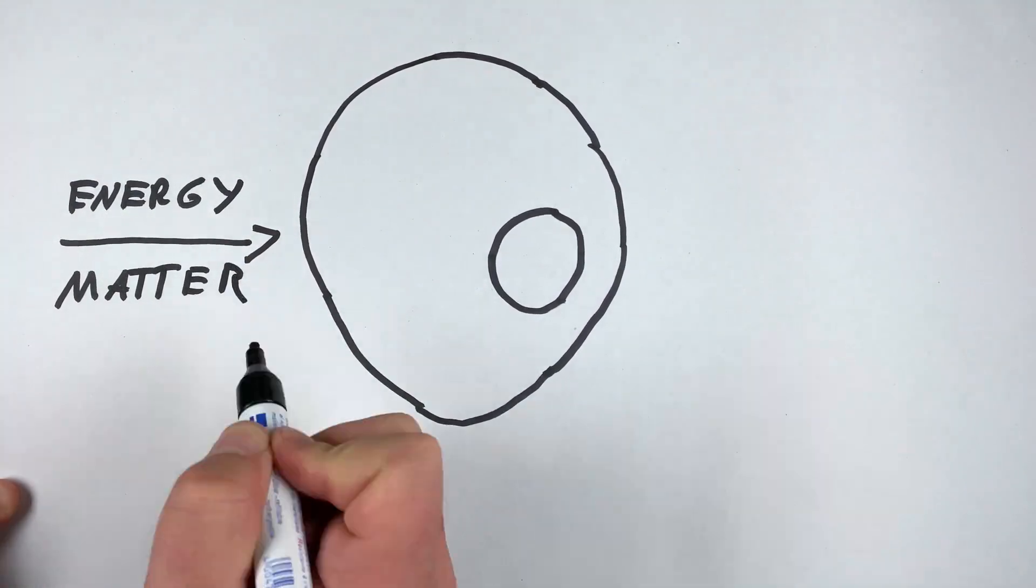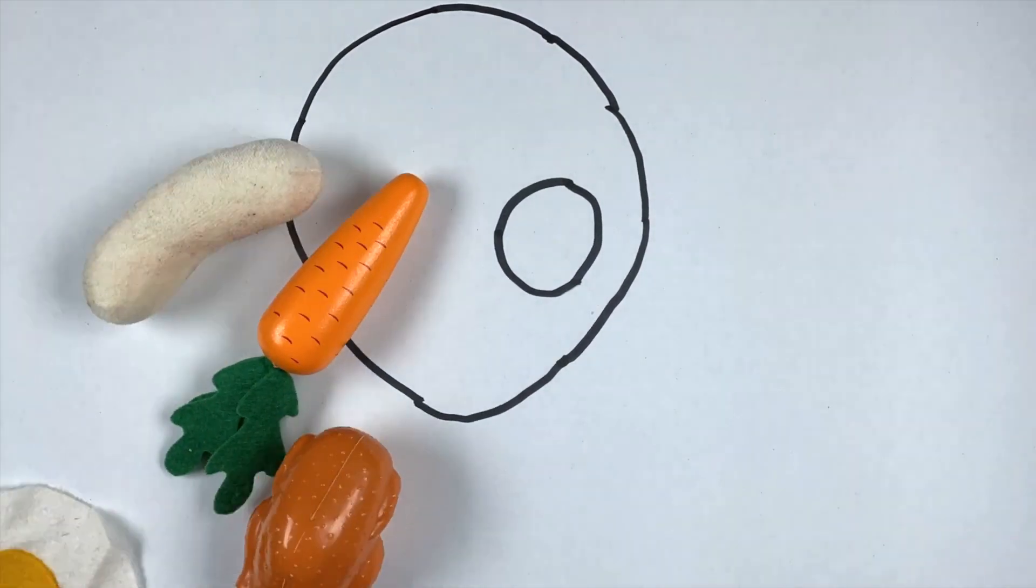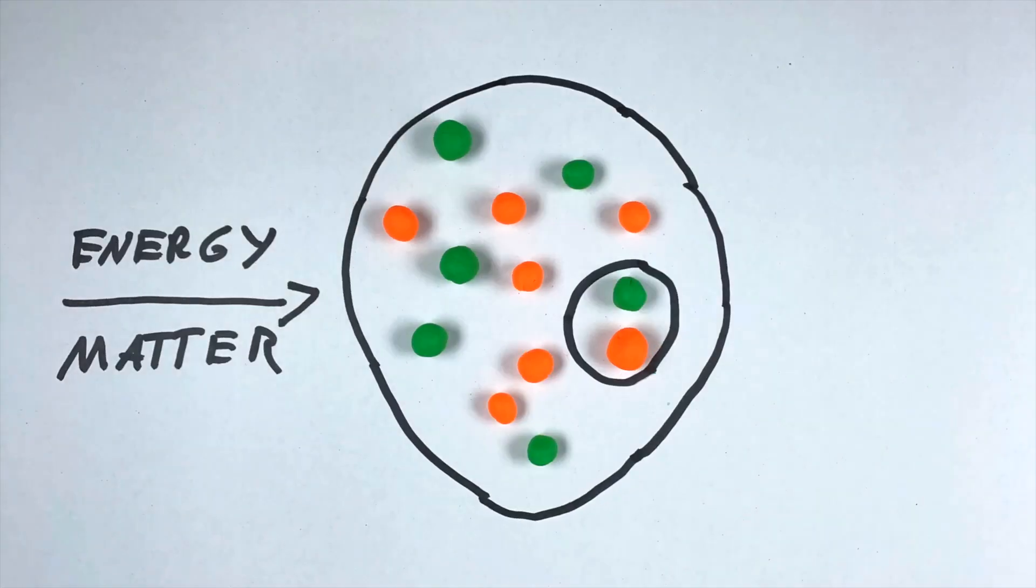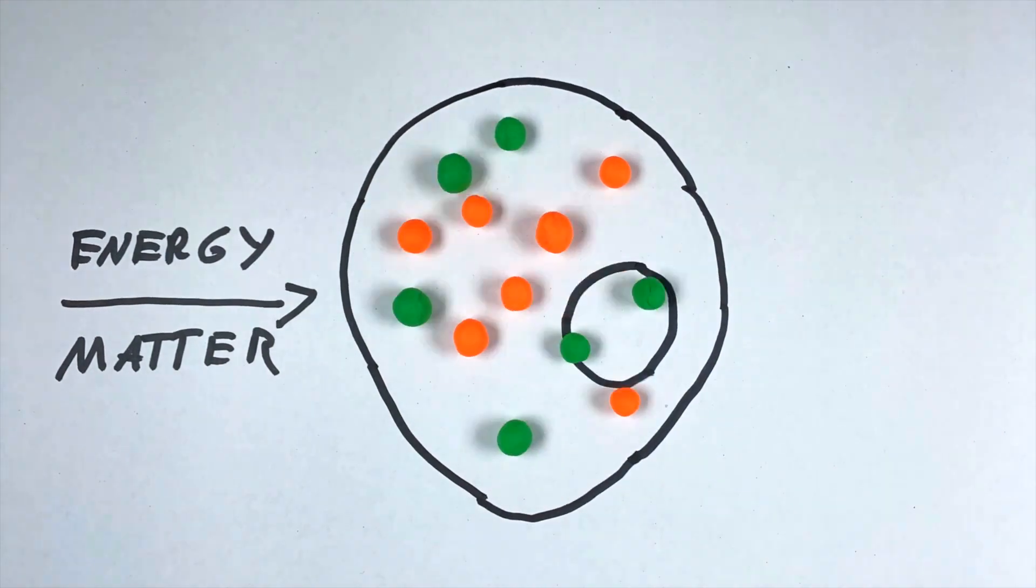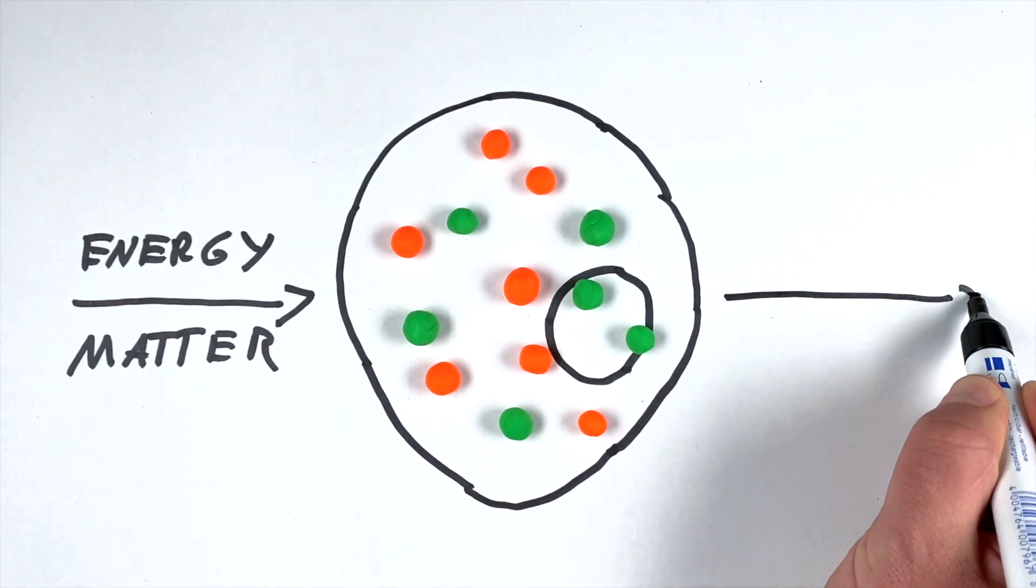They require non-vanishing flows of energy and matter in the form of nutrients which are converted by cellular metabolism to forms of energy and matter the cells and organisms can use, such as ATP and molecular building blocks.